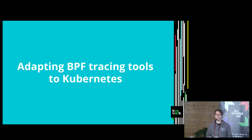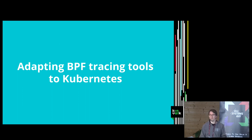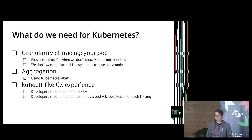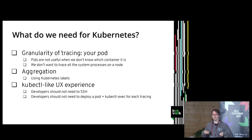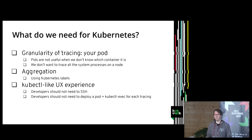Those two tools — BPFtrace and the tools from BCC — run on a single node on the command line, but they would be useful at the Kubernetes level as well. To adapt them to Kubernetes, the granularity of tracing should be different. In Kubernetes we care about pods, not specific PIDs — we want to trace a full pod. We want a user interface where we just say we want to trace this pod and the system does what it needs, addressing pods at the Kubernetes level using labels.